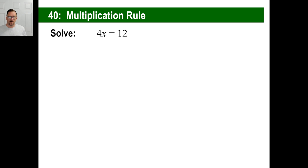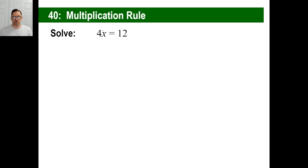Now we're going to use this rule. We can take this and multiply. Look at this: you have 4 times some number equals 12. We don't want 4x — we want x by itself, a positive 1x. To get the coefficient to where it's just 1x, we're going to multiply the coefficient by its reciprocal. So 4 over 1 — we just multiply by 1 over 4.